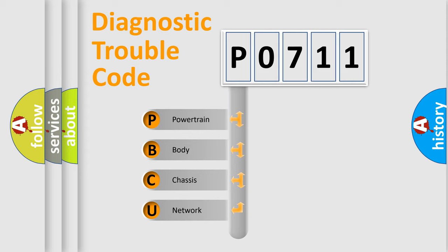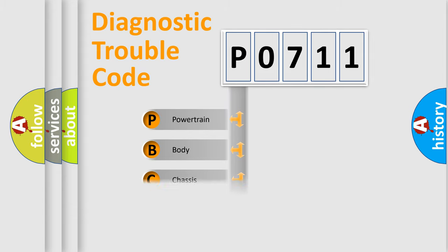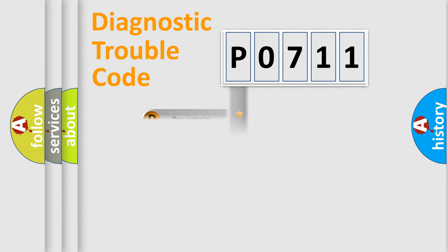We divide the electric system of the automobile into four basic units: powertrain, body, chassis, and network.